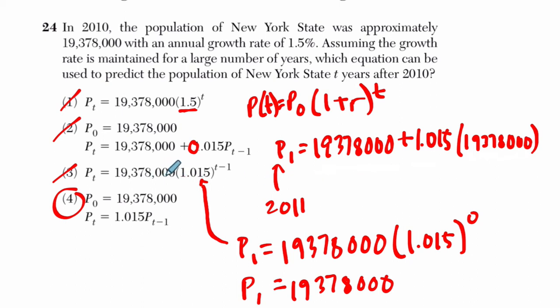In the third one here, instead of it being T minus 1, it would just be T, and then it would work. So I plug in 1, and that would be one year after the starting point. You have 19,378,000 times 1.015 to the 1st, which would make it go up by 1.5%. Now in the last one, let's make sure that it works.